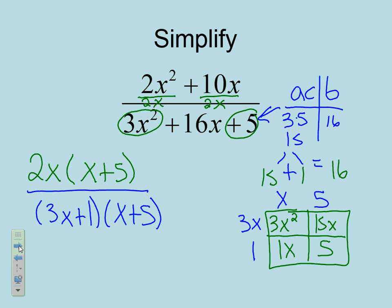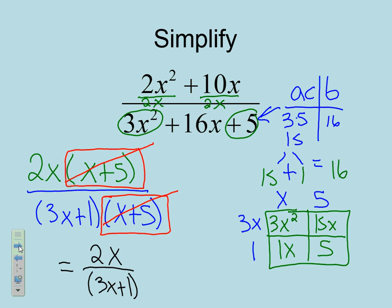Now, since these factors are the same right here. I have an x plus 5 and an x plus 5 on the bottom. Those can be canceled. Because they are the exact same factor. If there's the exact same thing on the top and the bottom, we can cancel them out. Now, that leaves us with on the top, I have 2x. And on the bottom, I have 3x plus 1. Since these are not the exact same thing on the top and bottom, this is where I'm going to leave my answer.